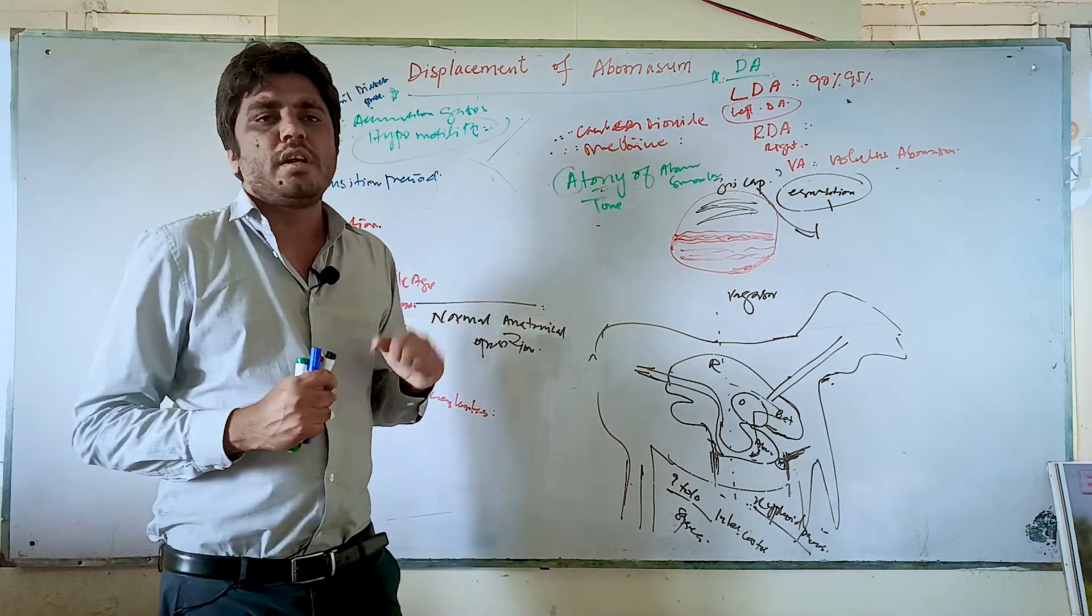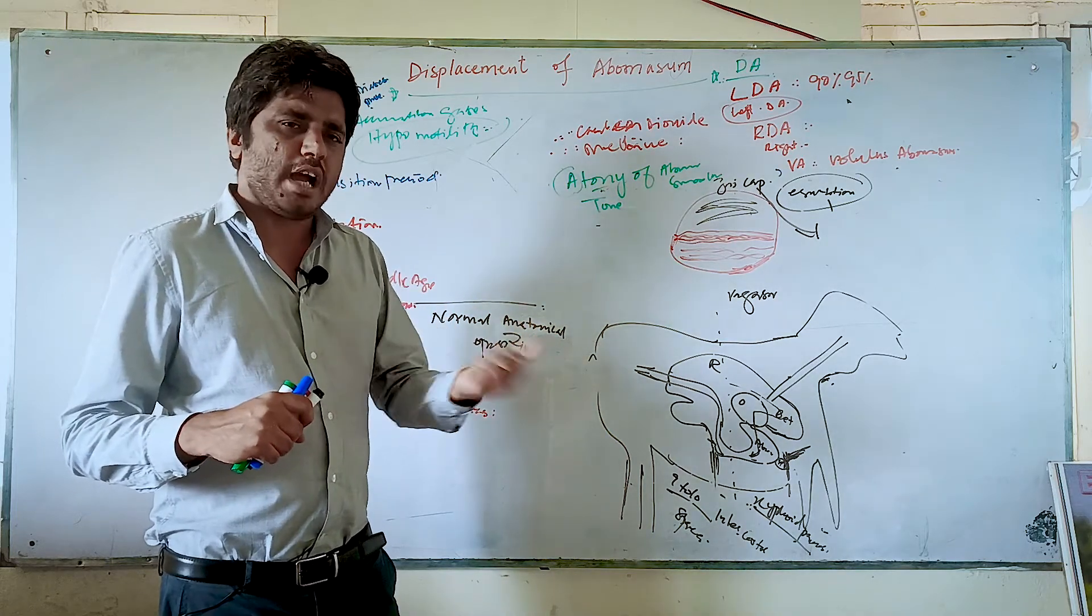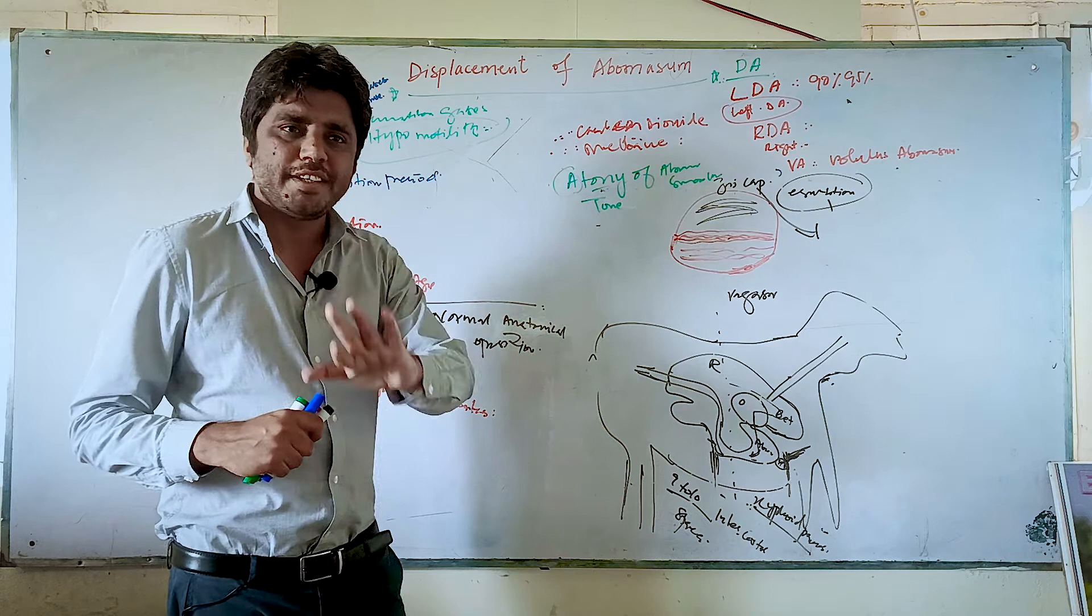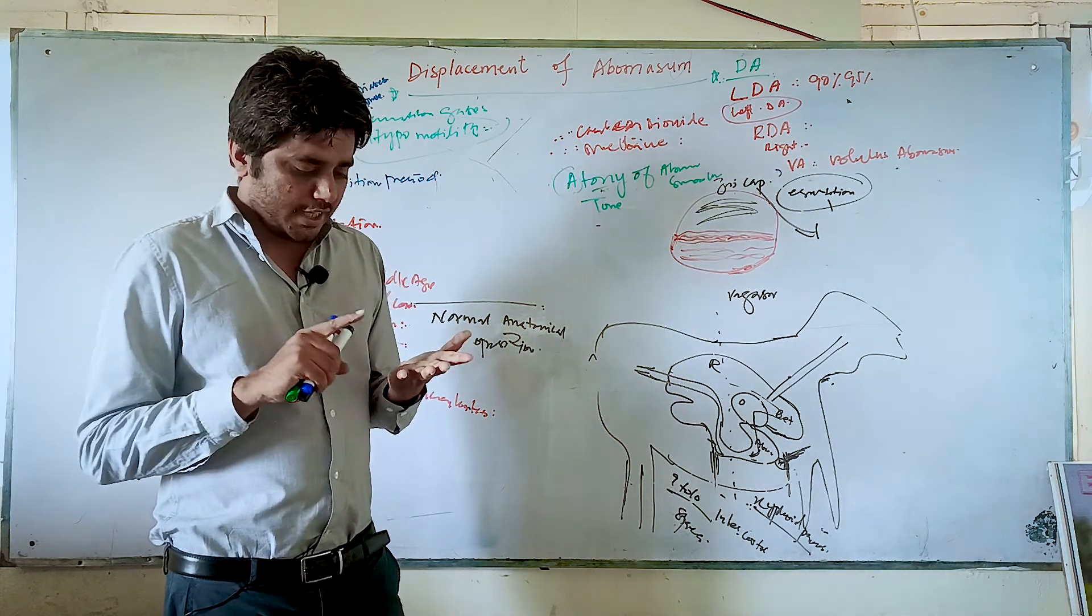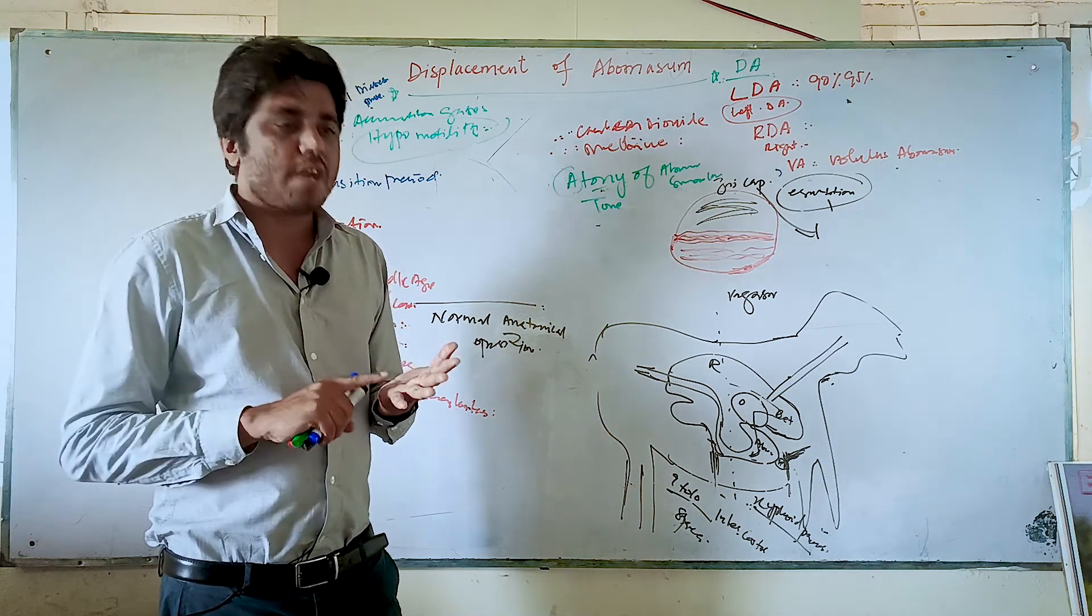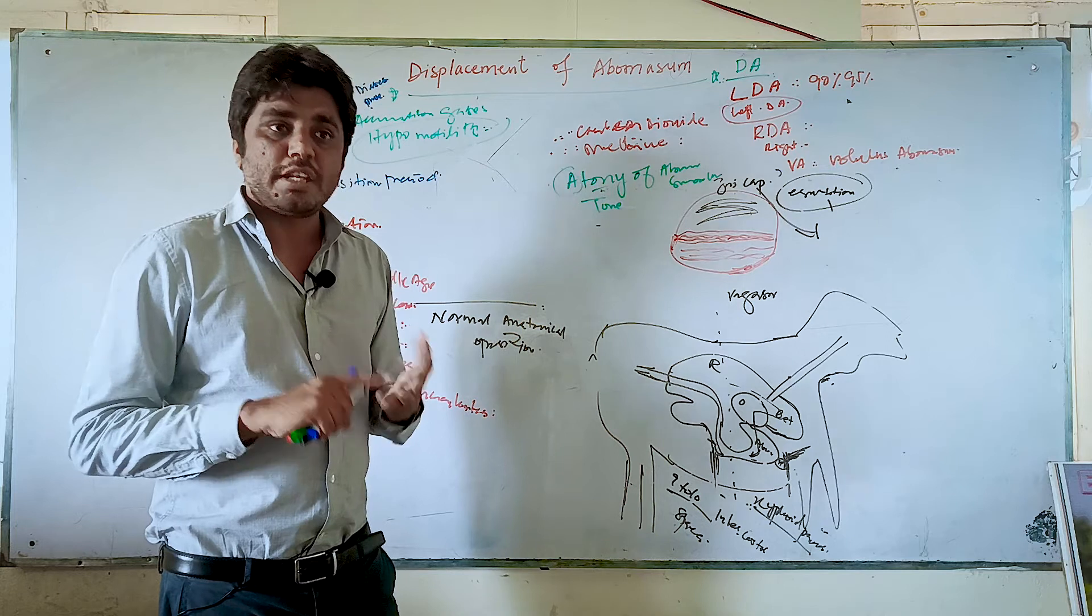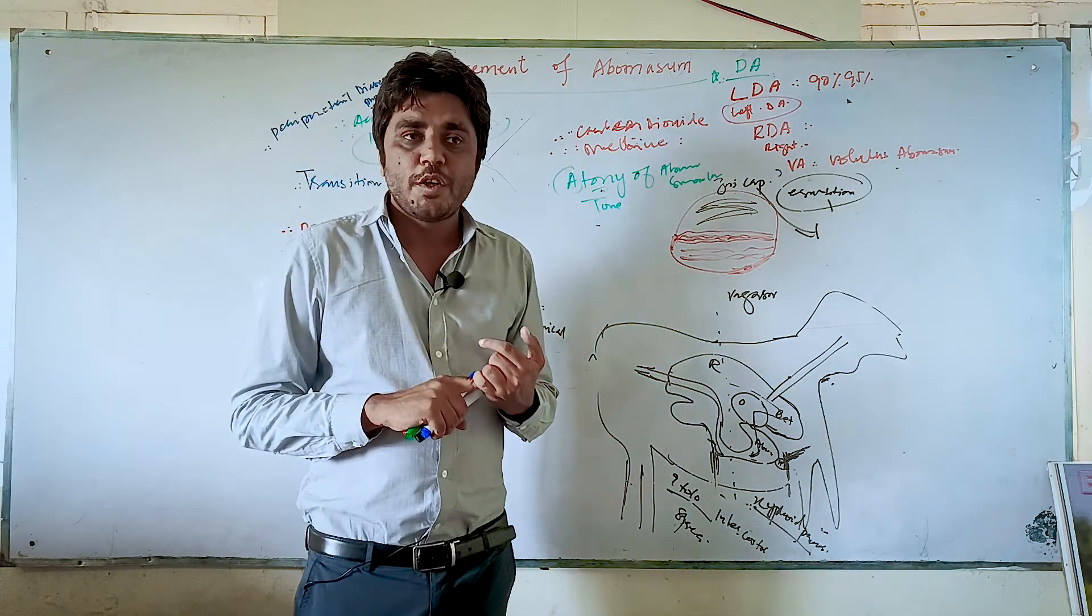But many other diseases which are occurring may also have similar symptoms. But one thing can help you. If there is not other disease like metritis, not infectious disease, the temperature of the cow will be normal. The respiration rate and pulse rate of the cow will be normal.